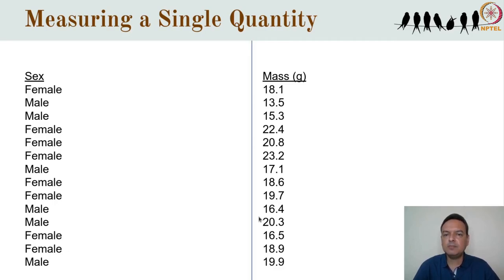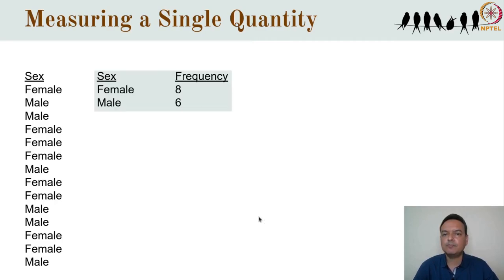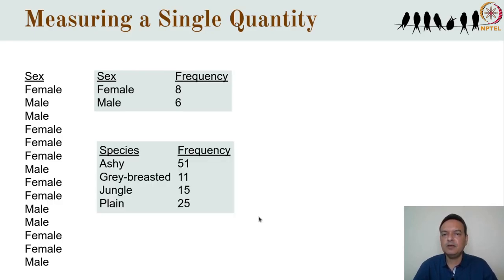We usually can't make much sense out of a series of labels or numbers, so the raw data needs to be summarized in some way. For categorical data, the obvious way to summarize is to count up the number of individuals in each category — here there are 8 females and 6 males. These two summaries are examples of what's called a frequency table.